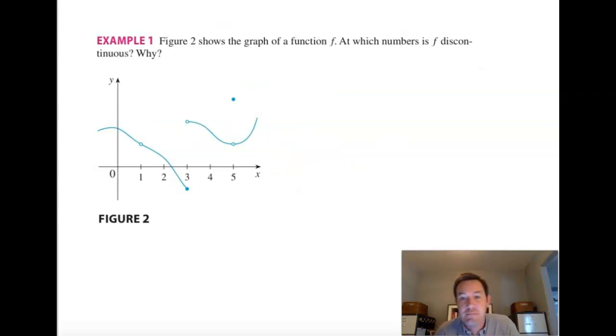Let's do a couple examples. So, they're just giving us a function and asking at what numbers is f discontinuous and why. So, we can pretty clearly see it's discontinuous. This is just a point discontinuity.